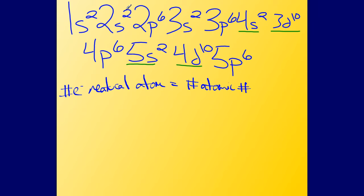2 and 2 is 4 plus 6 is 10, 2 is 12, 18, 20, 30, 36, 38, 48, 49, 50, to 54. So that's going to be 54 electrons here.